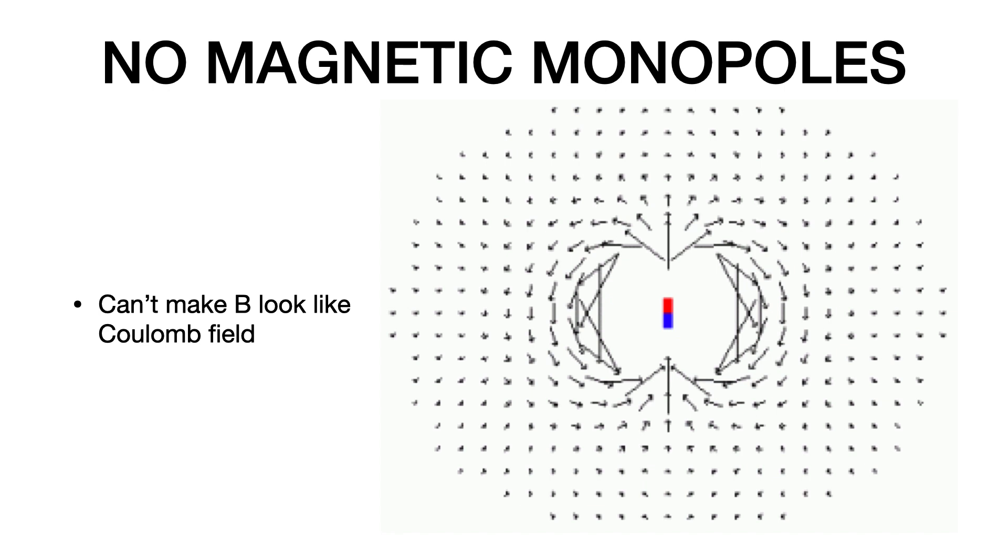We will never find, well, we have never found a pattern of magnetic field in space that looks just like the electric field due to a point charge. A single magnetic monopole would make that, but we have never found that.